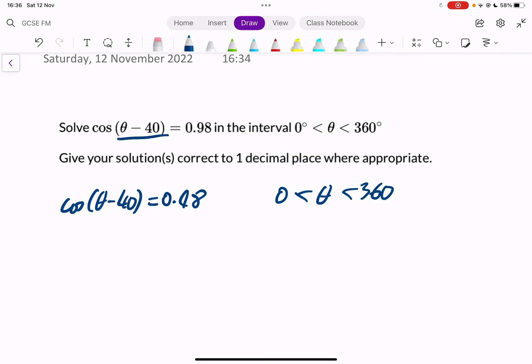Now the first thing you're going to notice is my angle is theta minus 40. So we're going to change, instead of the middle bit of our inequality being theta, it's going to be theta minus 40. So to get from theta to theta minus 40 you take away 40. So that 0 minus 40 is minus 40, 360 minus 40 is just 320 degrees. So that's the first thing we do.